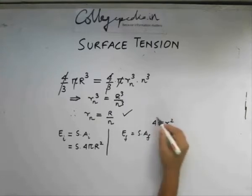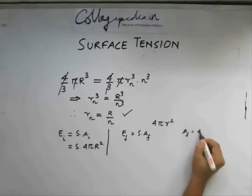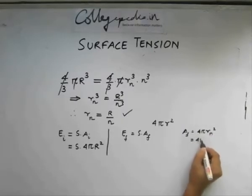So, using this, we find that for one small drop which formed later, the area is going to be 4 pi rn square or 4 pi into r square by n square.